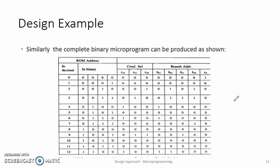Continuing in a similar manner, the complete binary program can be produced which is shown in the slide. This is the address in decimal, this is in binary, these are the condition select bits, what should be the values in order to select the multiplexer inputs, and these are the branching addresses depending on whether it is sequential or non-sequential branching.